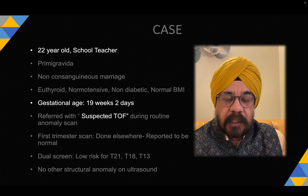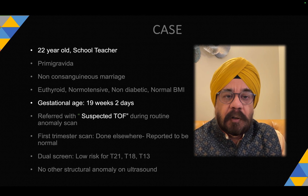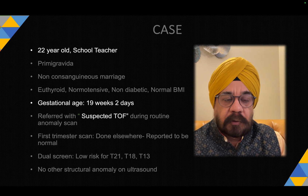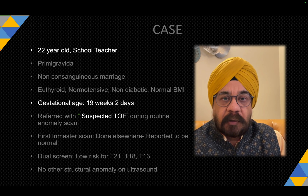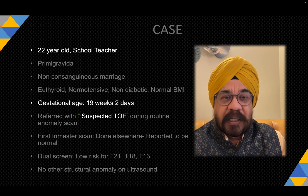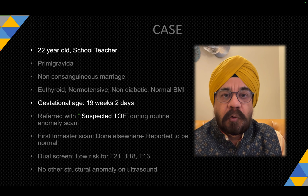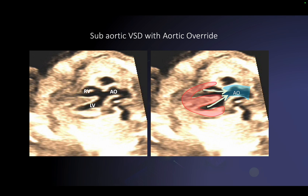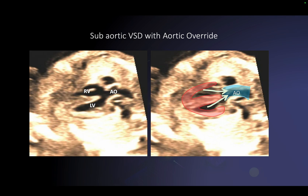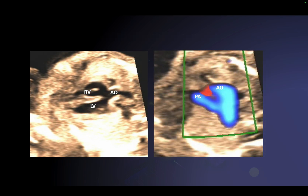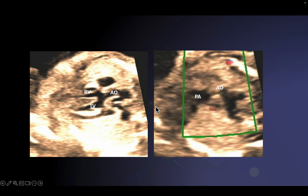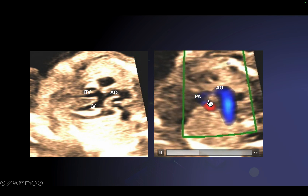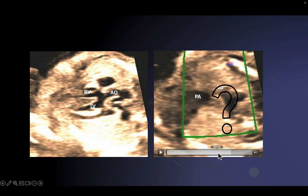This is a school teacher, 19 weeks of gestation, referred for a fetal echo with suspected tetralogy of Fallot. You guys are picking up tetralogy and sending for further assessment - that's today's discussion. This patient had an aortic override - you can see the blood from both RV and LV entering into the aorta. On the three-vessel view you see the pulmonary artery is small; it's not making a V, it is making a T. And there is something called the question mark sign.